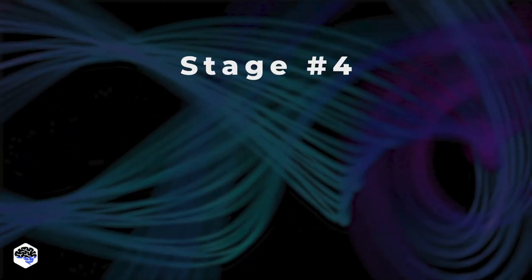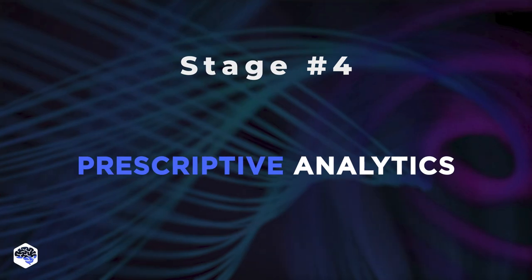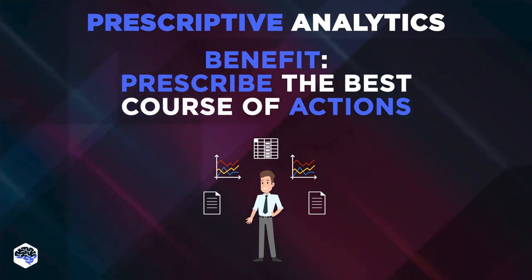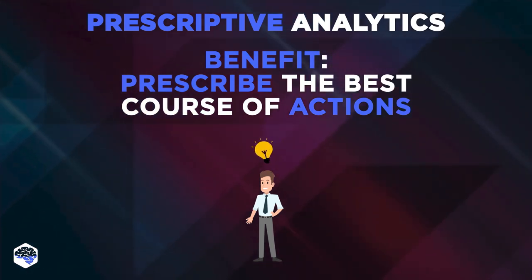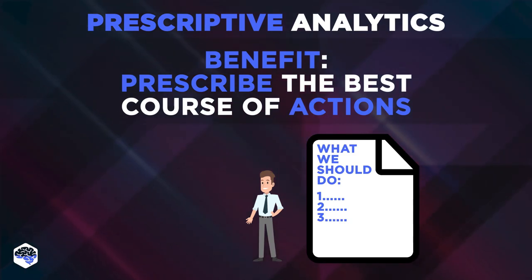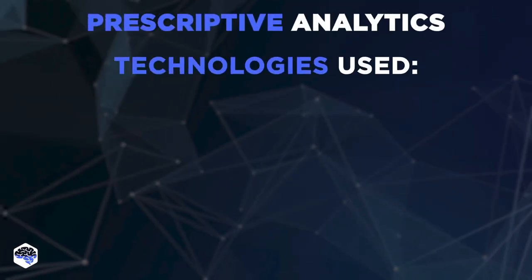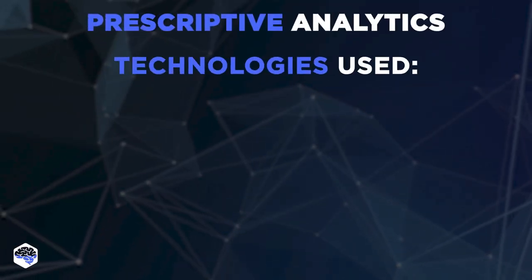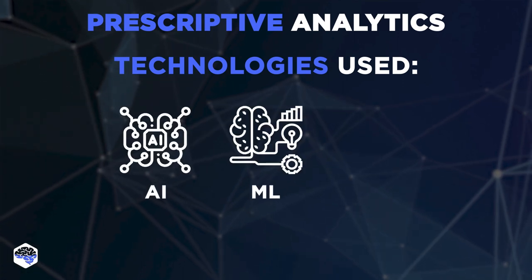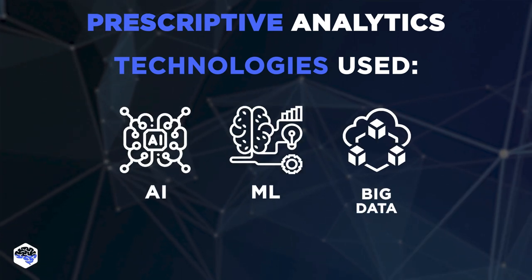The fourth stage of analytics maturity is prescriptive analytics. That's the highest and most transformative stage, in which an organization can use data to prescribe the best course of action, predict possible future results, and uncover future opportunities. Among the technologies that make accurate predictions possible are artificial intelligence, machine learning, and big data.